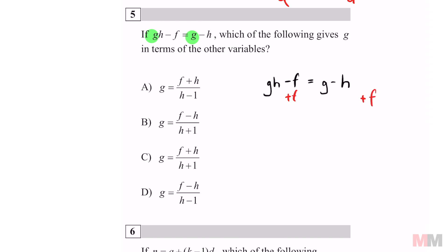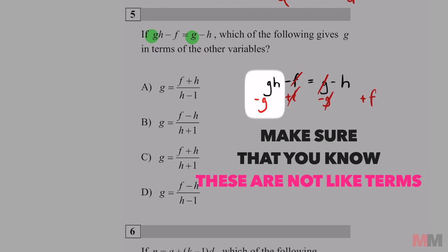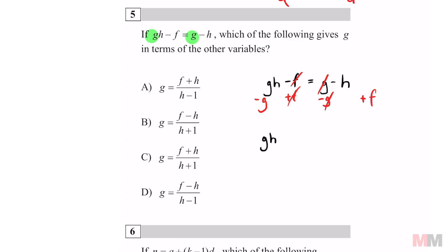I can subtract a G over here. These are going to cancel off and these are going to cancel off. In the SAT, they usually always put terms in alphabetical order. I got GH minus G equals F minus H. F goes before H and your G's are separated on the left.